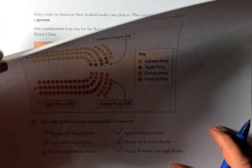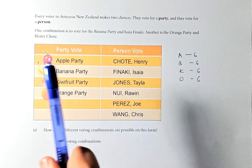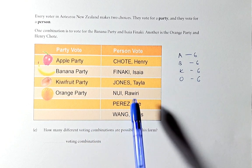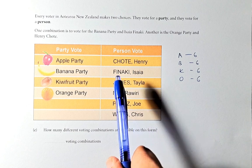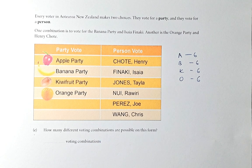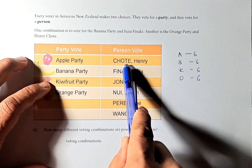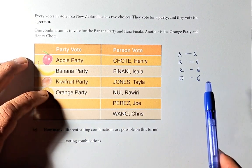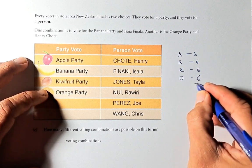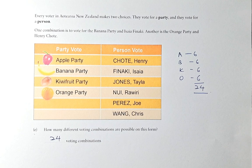Now we are going to do the last question. Each voter in Aotearoa New Zealand makes two choices: they vote for a party and they vote for a person. One combination is to vote for Banana Party and Isaiah Finafki; another is Orange Party and Henry Code. So how many combinations are possible on this form? Apple Party can be combined with 6 different people, same for Banana Party, Kiwi Fruit Party, and Orange Party — each with 6 people. So there are 4 party votes and 6 person votes, giving 4 × 6 = 24 combinations in total. Hopefully you get it right — see you in the next video. Cheers everyone, and hope you do well in your numeracy exam this year!